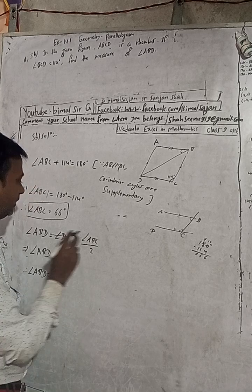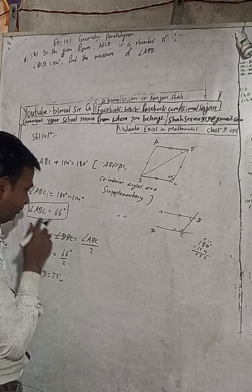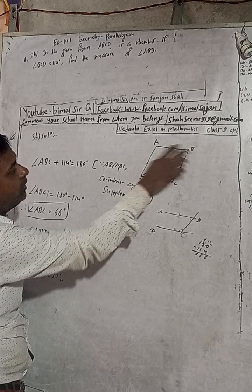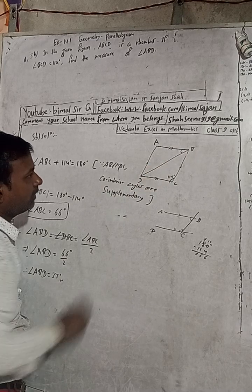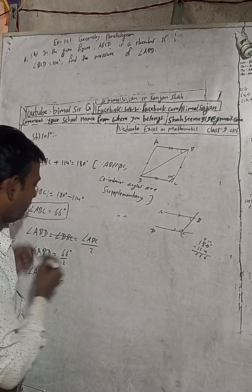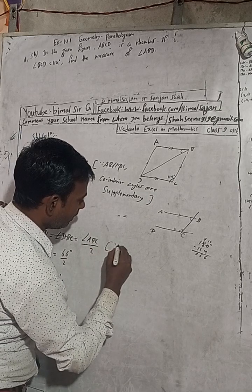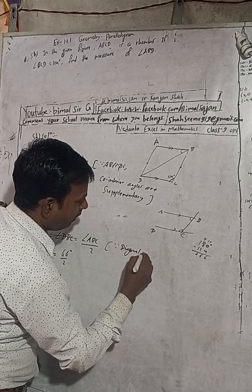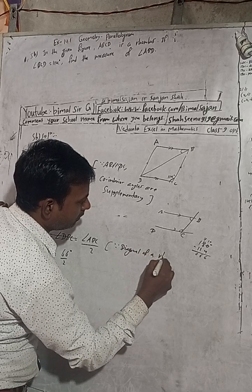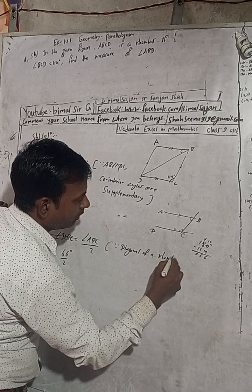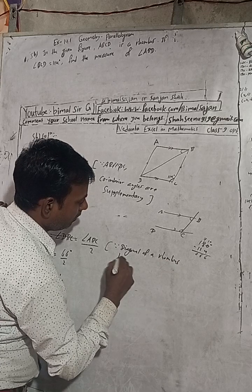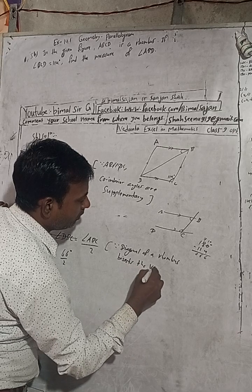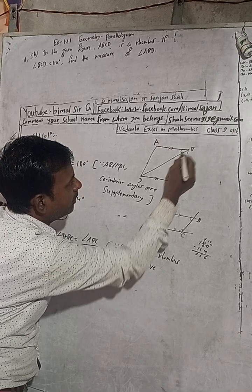The reason for this is: angle ABD equals half of angle ABC because the diagonal of a rhombus bisects the vertex angle — the vertical angle through which it passes.